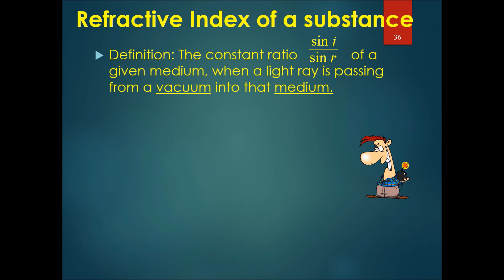The definition of the refractive index of a substance is the constant ratio sine i over sine r of a given medium when a light ray is passing from a vacuum into that medium. This can be vacuum or air because they have roughly the same optical density. The symbol for this is n, and the formula is n equals sine i over sine r.